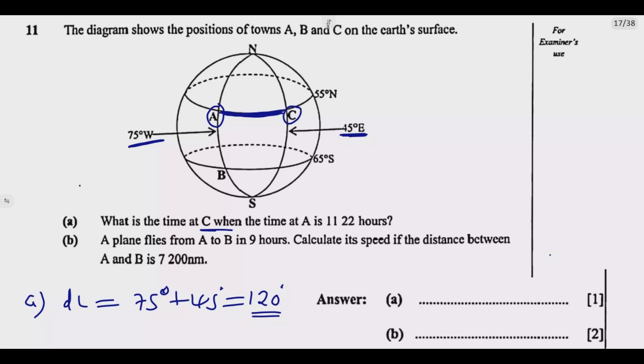Then once we know the difference here, the next thing is we need to find the time. The principle that we use is the fact that the earth rotates 360 degrees in 24 hours. So we divide by 24. This will give us 15. So for every 15 degrees, that's a difference of one hour. So for every 15 degrees we get a difference of one hour.